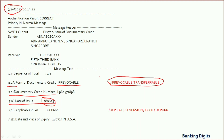Field 40E refers to the applicable rules. Generally it is mentioned as UCP 600, or UCP latest version, or eUCP, or UCP URR latest version. The applicable rules of the respective guidelines will apply to this LC accordingly.